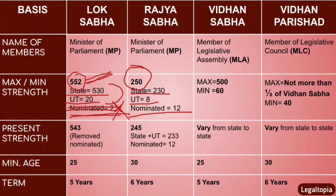Vidhan Sabha's maximum limit is 500 and minimum is 60. For Vidhan Parishat, the maximum strength is not more than one-third of Vidhan Sabha, and the minimum is 40.